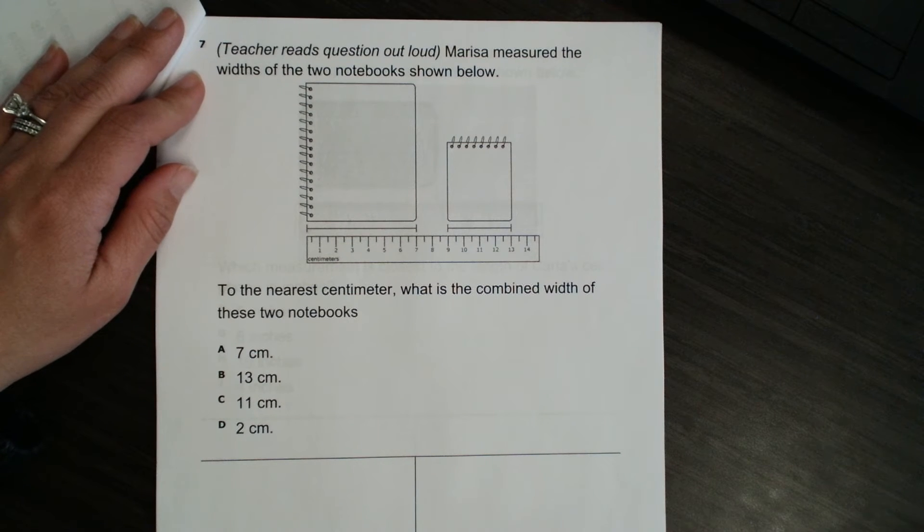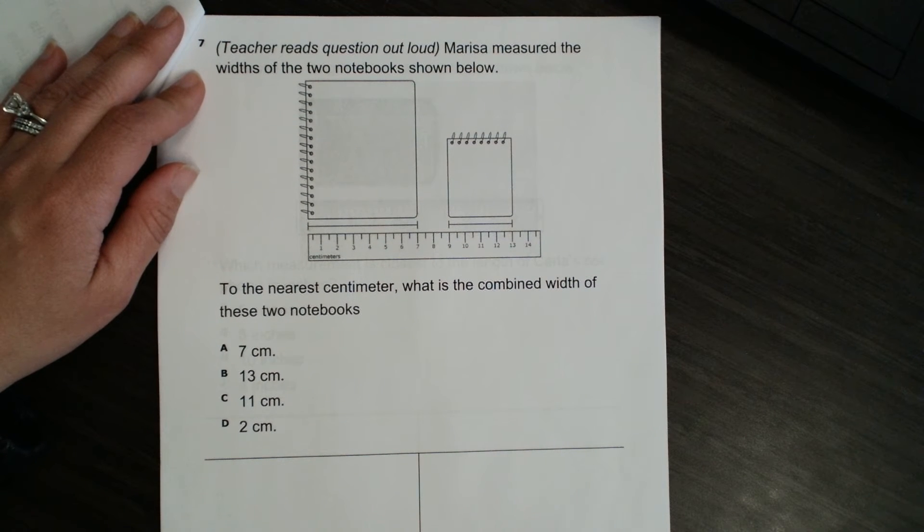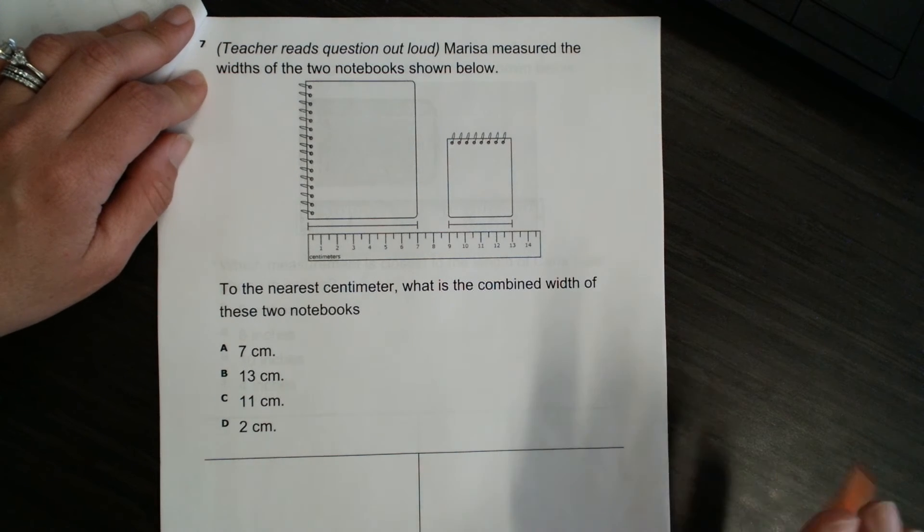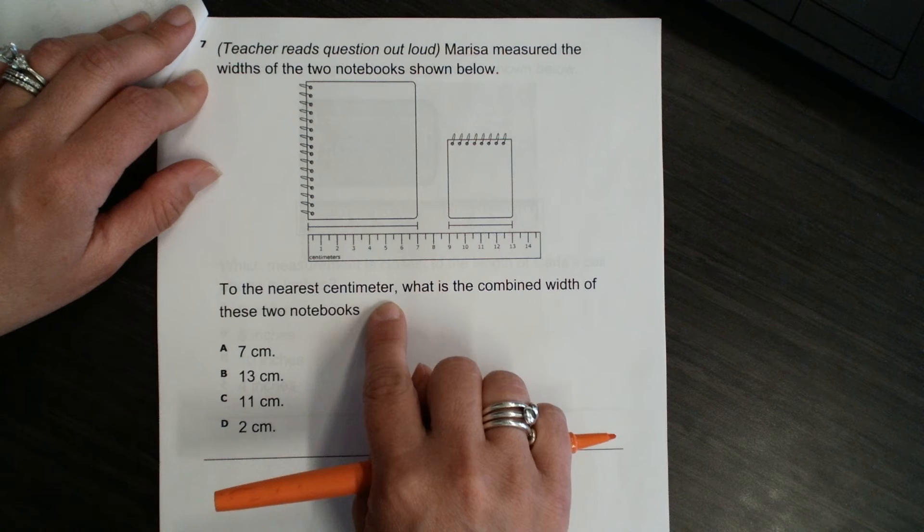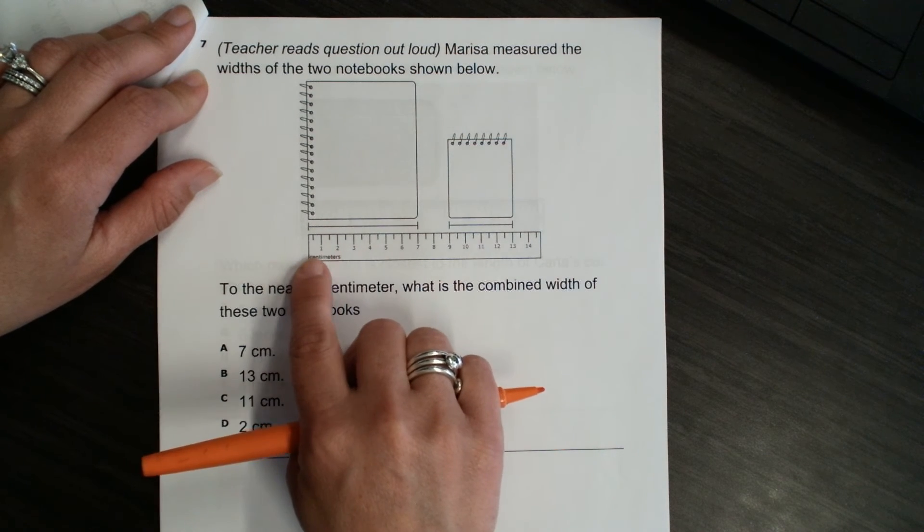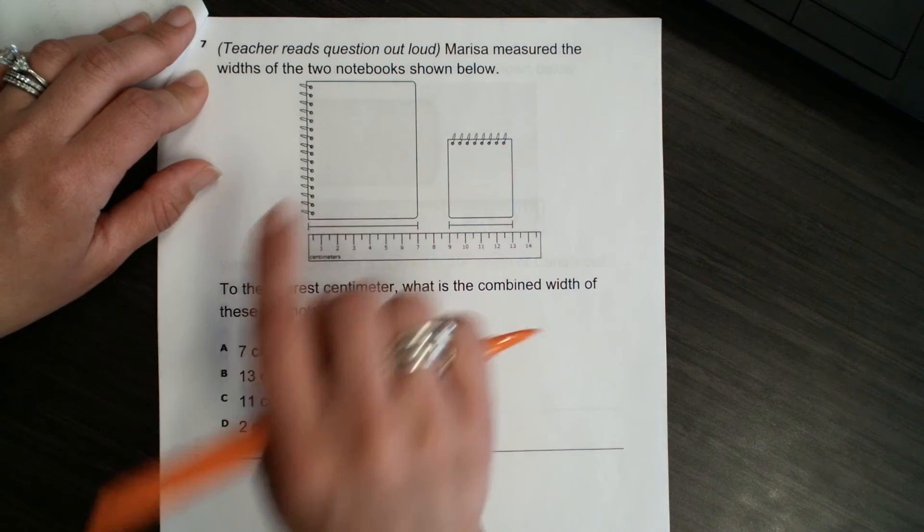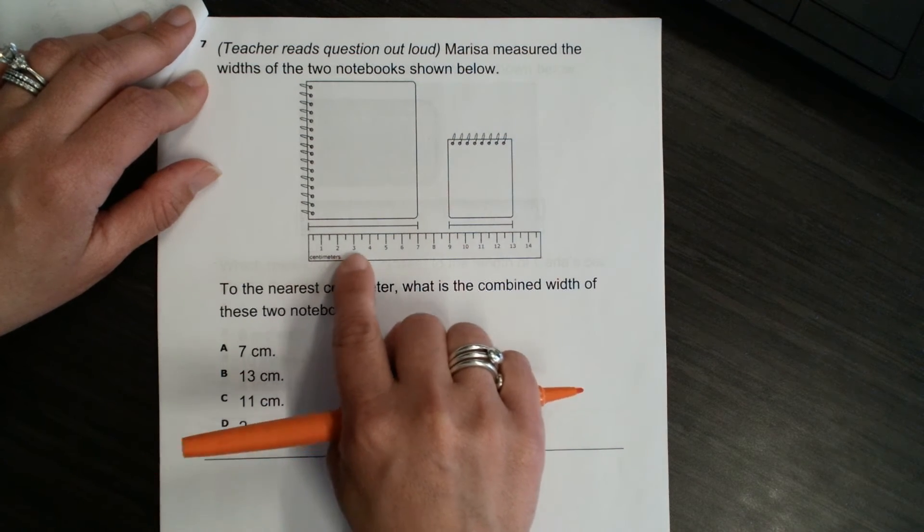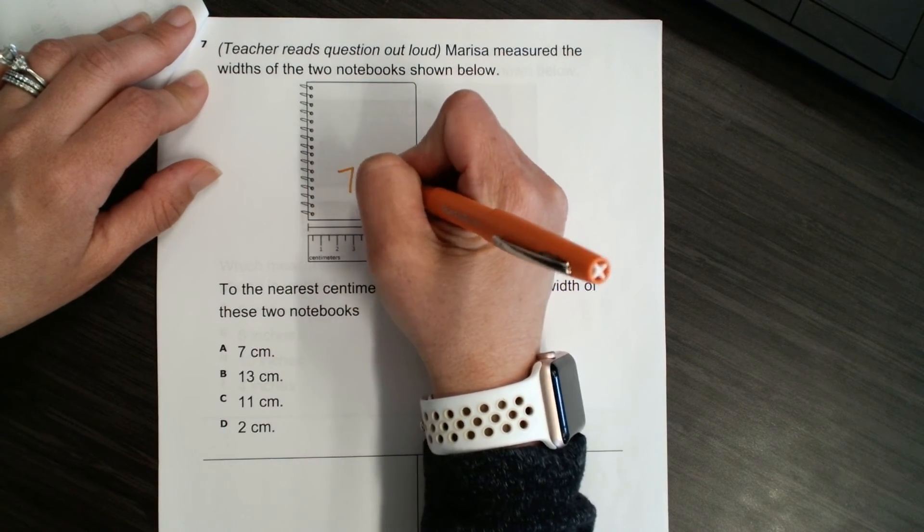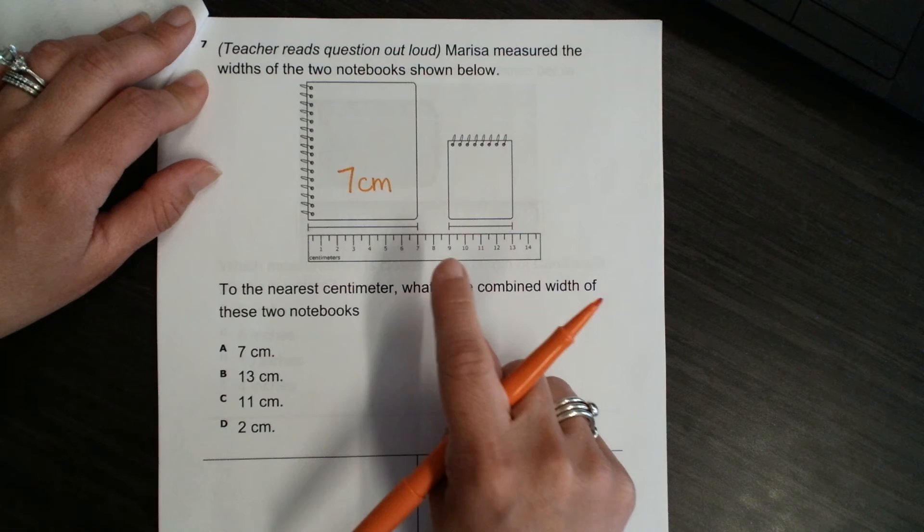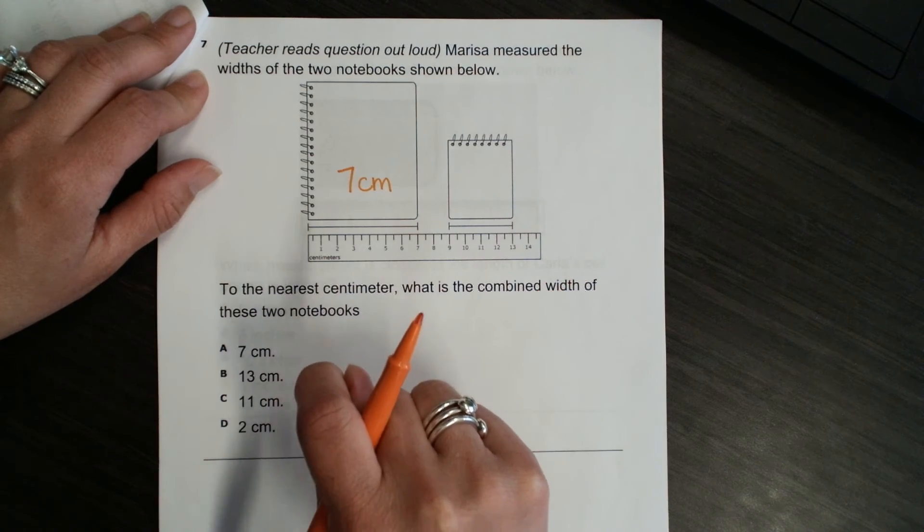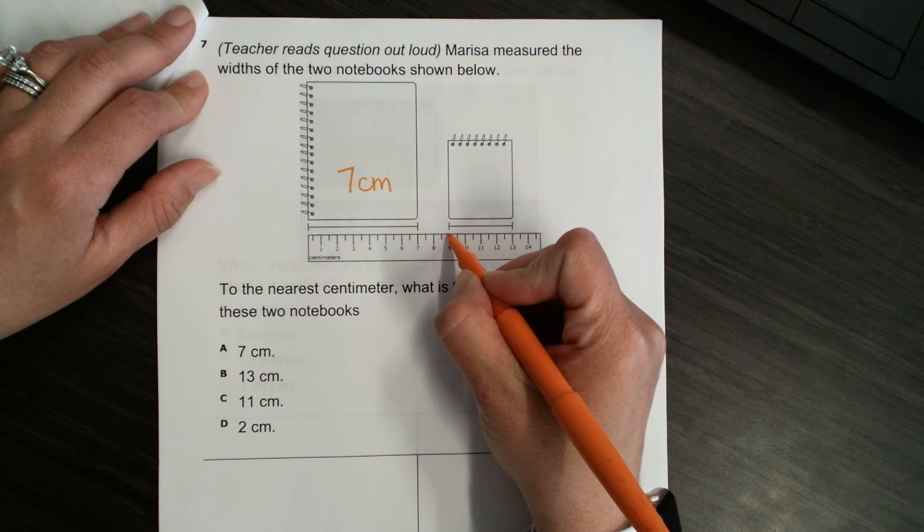Number seven. Marissa measured the widths of the two notebooks shown below. Okay. This one's kind of tricky, but we practiced it. To the nearest centimeter, what is the combined width of these two notebooks? So, first, let's see how many centimeters the first notebook is. And when I look at my ruler, I see that it goes to seven. So, I'm going to write seven centimeters on that notebook. Now, there's a space, so I can't keep going. Let's see how many centimeters the second notebook is. I'm going to do jumps. One,